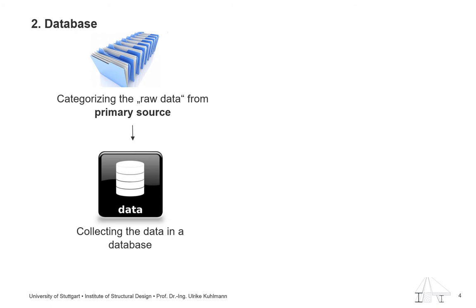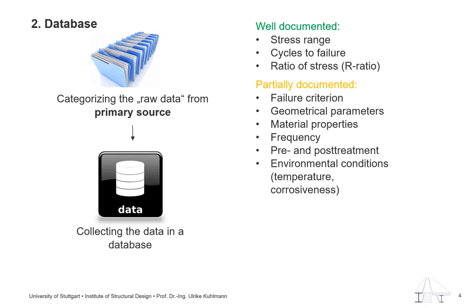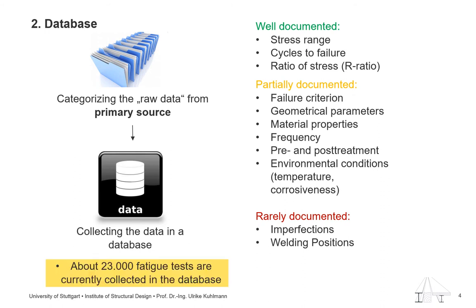Not every source was providing all the properties that we were collecting in the database. Properties like the failure criterion or geometrical parameters of the test specimens are not always documented. Things like imperfections are really rarely documented. For most of the data it is impossible to assign the data to quality levels according to EN 5817. However, the specimens were normally welded under laboratory conditions, so we can be quite sure that the quality of the welds was good. Up to now we have collected about 23,000 fatigue tests in the database.